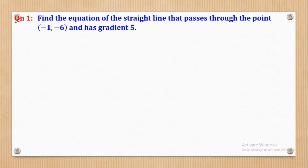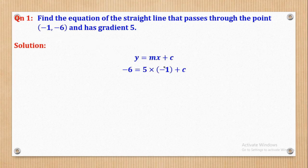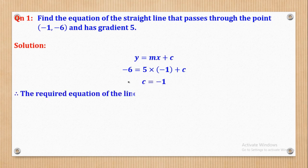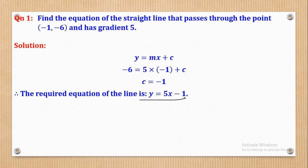Question 1: Find the equation of the straight line which passes through a given point and has a given gradient. We start by quoting the general equation y = mx + c, then substitute for the gradient and the coordinate. The y-coordinate is negative 6 and the x-coordinate is negative 1. When I make c the subject, the y-intercept is negative 1. Then rewrite the equation with m and c replaced — that is the required Cartesian equation.